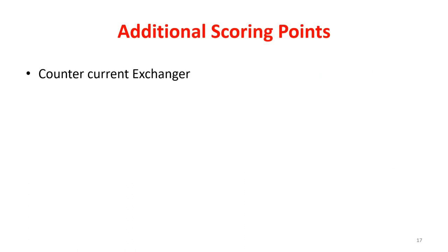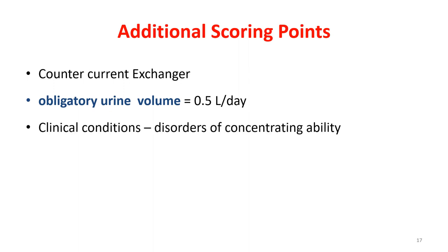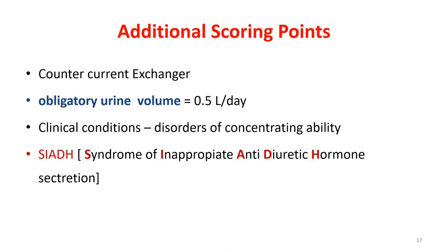For additional scoring points, mention countercurrent exchange: once the countercurrent multiplication system works, this osmolarity is maintained by the countercurrent exchanger in the Vasa Recta. You can also write about obligatory urine volume — the minimum urine volume the kidney must excrete to clear solutes, which is 0.5 litres per day. Additionally, mention clinical conditions involving disorders of concentrating ability: SIADH — syndrome of inappropriate antidiuretic hormone secretion — and diabetes insipidus. These additions will complete your answer and enhance your marks.